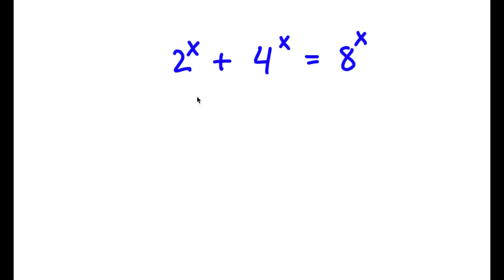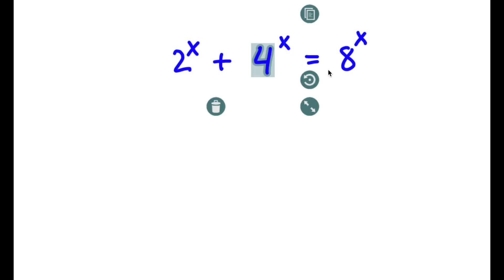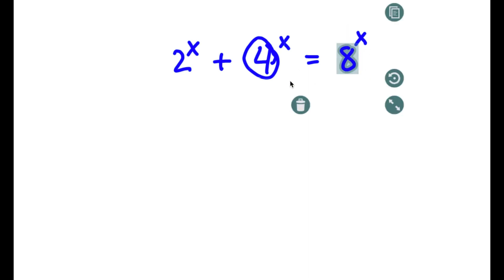In this problem, I have 2 to the power of x plus 4 to the power of x is equal to 8 to the power of x. I'm going to first start by rewriting 4 as 2 squared and 8 as 2 to the power of 3.